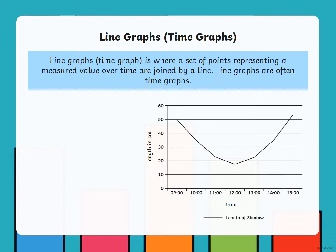Line graphs, time graphs. Line graph or time graph is where a set of points representing a measured value over time are joined by a line. Line graphs are often time graphs.